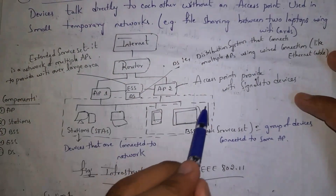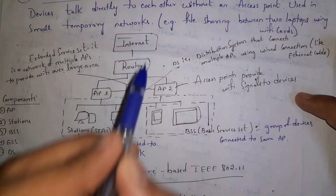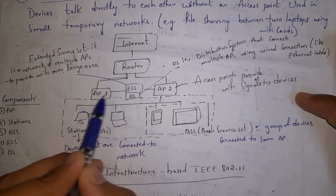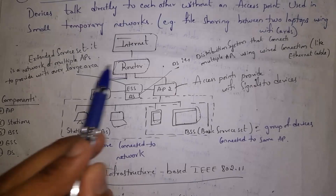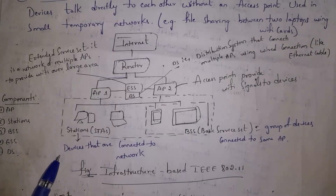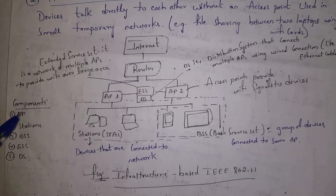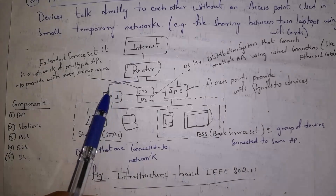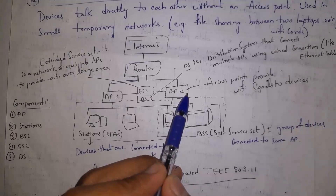In infrastructure mode, devices like laptops, computers, tablets, and mobiles connect to the internet through a router. The router contains access points — for example, access point one and access point two. Devices connected to the network are known as stations. AP stands for access point — the point where devices connect to the network. BSS (Basic Service Set) refers to devices connected to a single access point, for example a mobile and tablet connected to access point two.